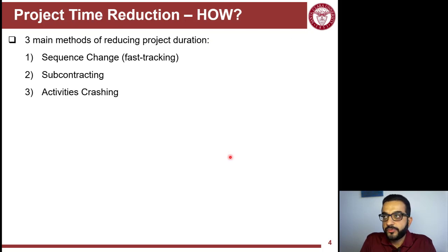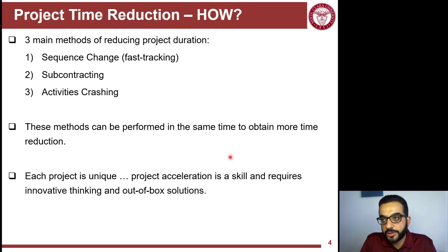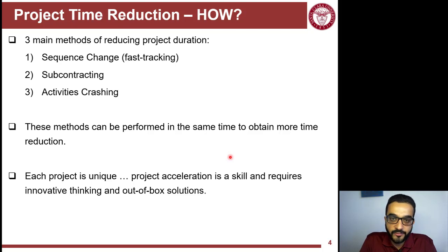There are three ways to reduce project duration or accelerate the project schedule: sequence change, subcontracting, and crashing the activities themselves. There is no single best recipe for all projects — every project is different, and you might apply only one or all of these approaches. You have to be innovative about how to reduce the project schedule considering each project's unique conditions, and this is how you shine as a project manager.